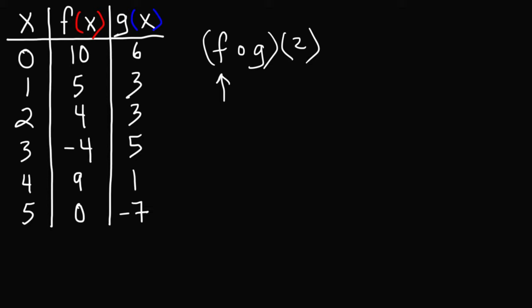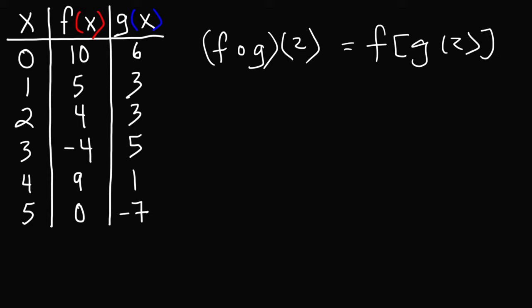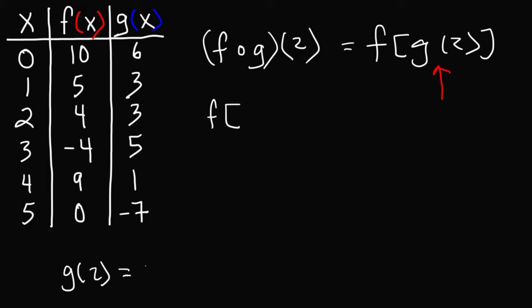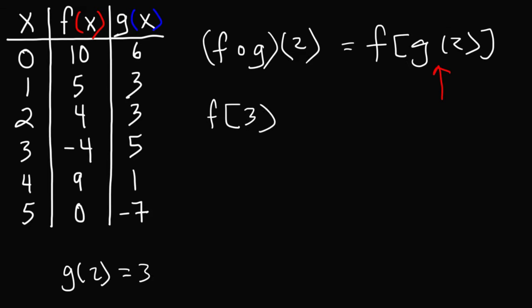F, which is written first, is on the outside. G, which is written second, is on the inside. So what appears to look like fog is really f of g of 2. What we need to do first is evaluate the function on the inside — what is g of 2? So when x is 2, what is the value of g? Here we see x is 2 and the value of g is 3. So g of 2 is equal to 3, and we're going to replace g of 2 with 3, giving us f of 3.